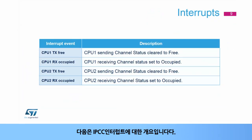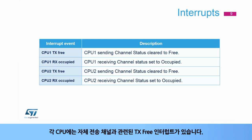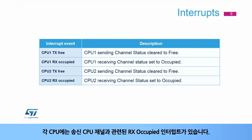Here is an overview of the Interprocessor Communication Controller interrupt. Each CPU has a TX-free interrupt associated to its own sending channel. Each CPU has an RX-occupied interrupt associated to the sending CPU channel.